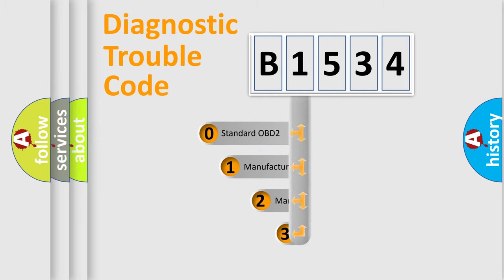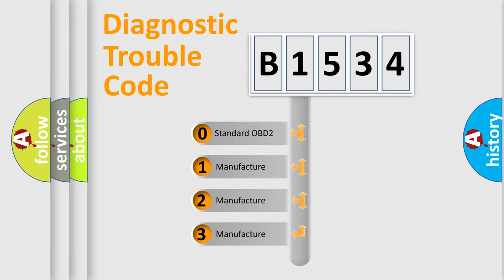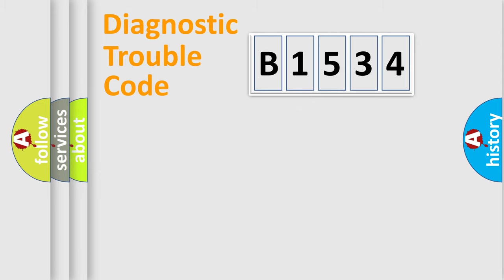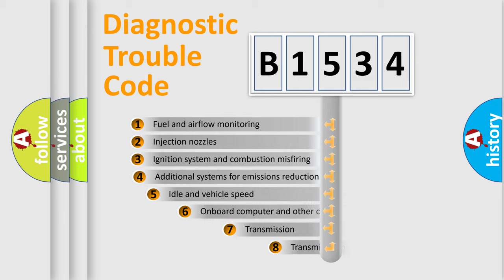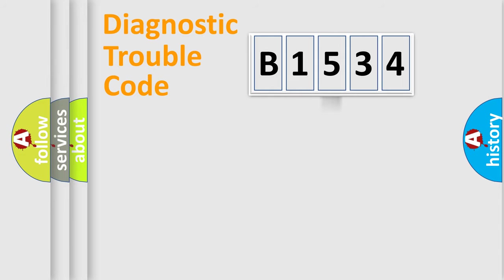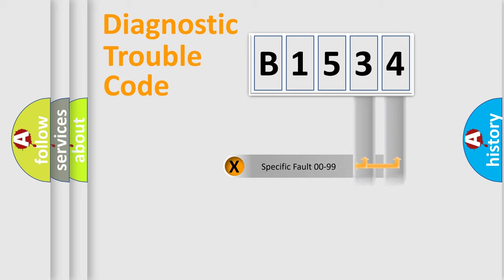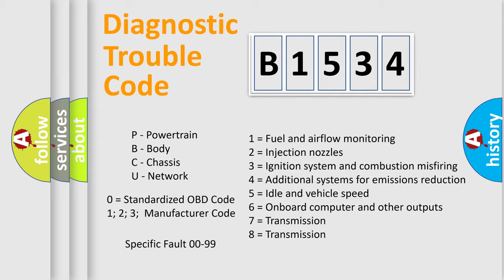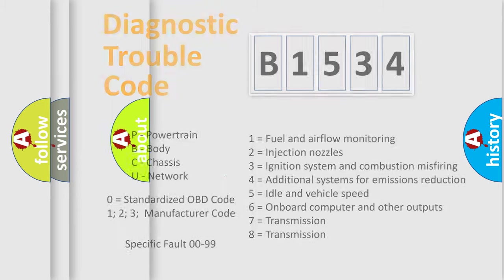This distribution is defined in the first character of the code. If the second character is expressed as zero, it is a standardized error. In the case of numbers 1, 2, or 3, it is a manufacturer-specific error expression. The third character specifies a subset of errors. This distribution is valid only for the standardized DTC code, and only the last two characters define the specific fault of the group. Note that such a division is valid only if the second character code is expressed by the number zero.